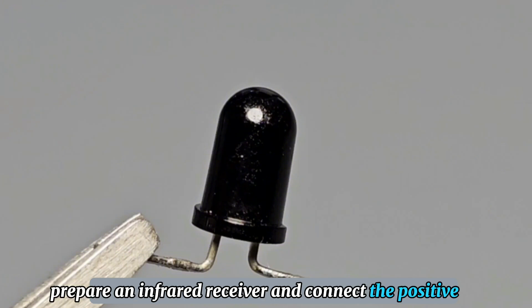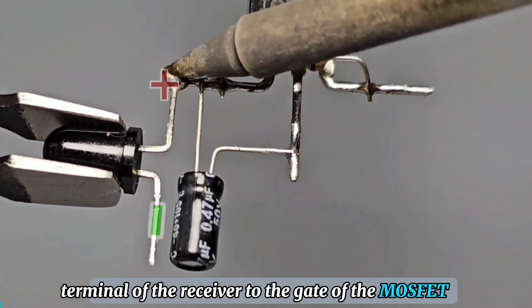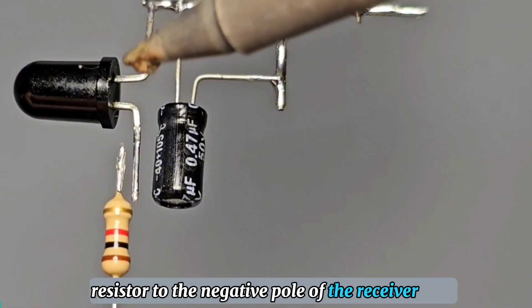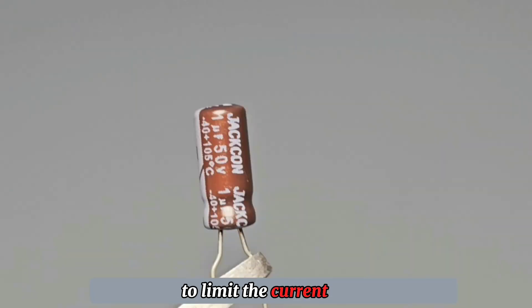Prepare an infrared receiver and connect the positive terminal of the receiver to the gate of the MOSFET. The gate of the MOSFET needs to be connected in series with a 1K resistor to the negative pole of the receiver to limit the current.